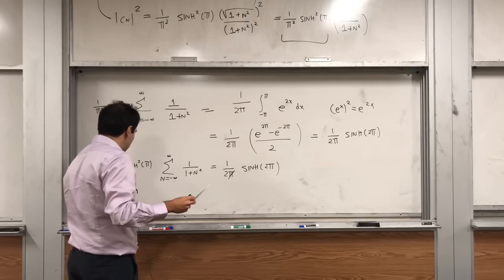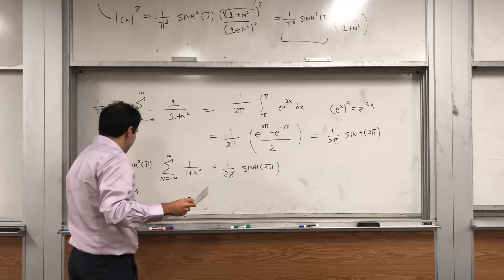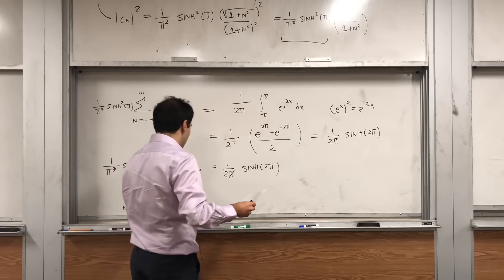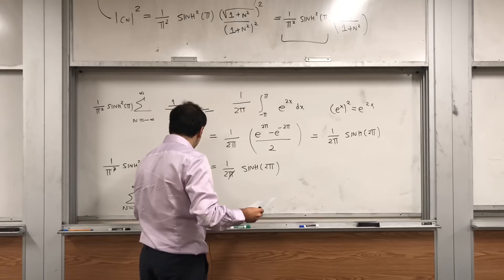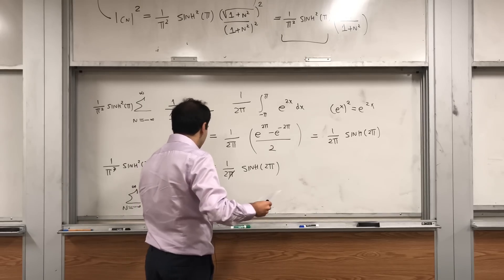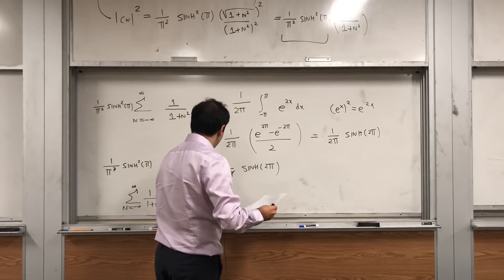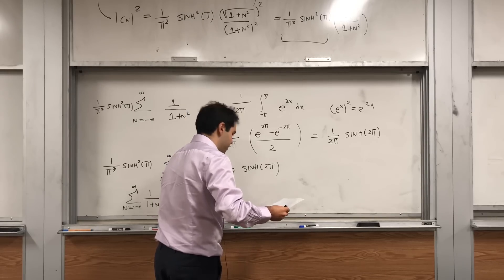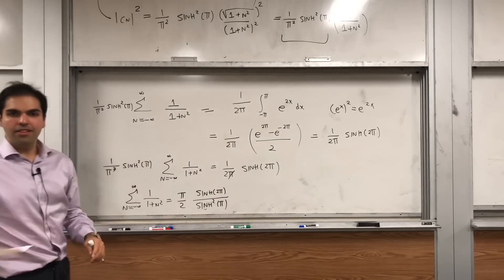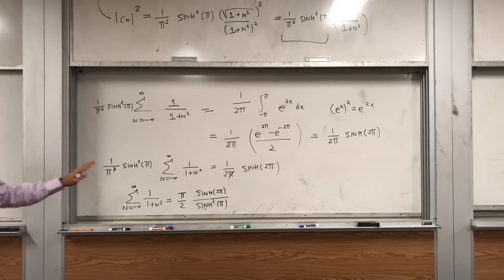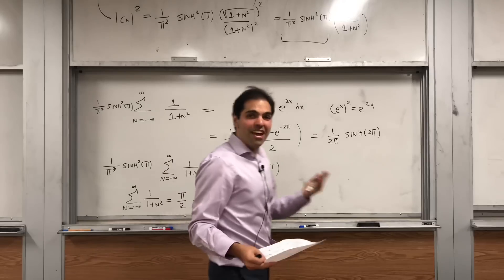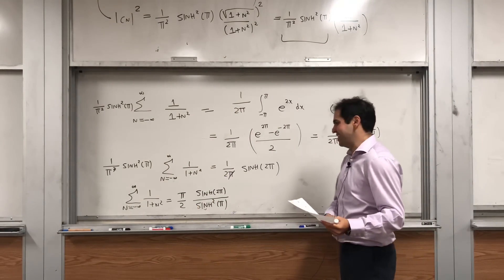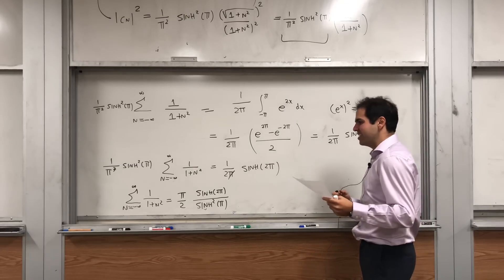One of the pi's cancels, and we get that the sum from minus infinity to infinity of 1 over (1 plus n squared) equals pi over 2 times sinh of 2 pi over sinh squared of pi. This is already amazing — very surprising because you might think it involves arctangent, but it involves sinh of 2 pi over sinh squared of pi.